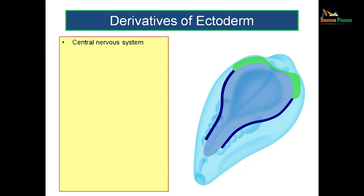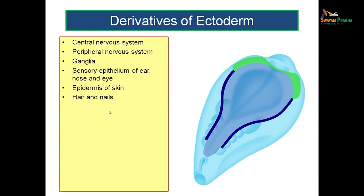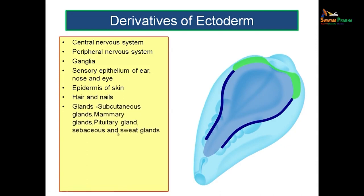In summary, the derivatives of ectoderm as a whole include: the central nervous system, the peripheral nervous system, the ganglia, the sensory epithelium of ear, nose and eye, the epidermis of skin, hair and nails, subcutaneous glands, mammary glands, the pituitary, sebaceous and sweat glands, and the muscles of the iris and erector pili. Note that the muscles of iris and erector pili are derived from ectoderm, whereas the rest of the muscles of the body are derived from mesoderm — this exception is important to remember.